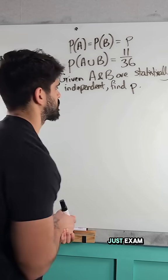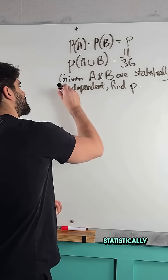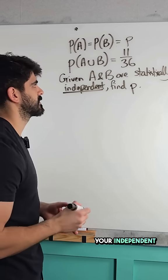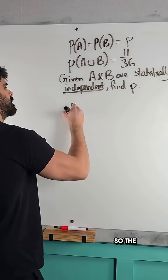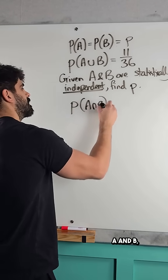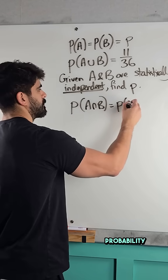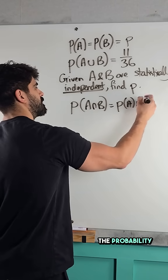So this is just exam technique, really. Whenever you see the word statistically independent, you write your independent statement first. So the independent statement is saying that the probability of A and B, the probability of these two things happening at the same time, is just the probability of A times the probability of B.